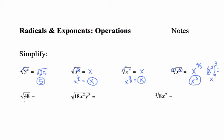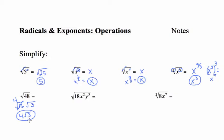Sometimes you can simplify square roots by splitting up what's under the radical sign. For example, I'm going to change root 48 into root 16 times root 3, since 16 times 3 is 48. The square root of 16 is 4, so the simplified version is 4 times the square root of 3, or 4 root 3. Notice the 4 is not a little 4 — it's not the 4th root of 3; it's 4 times the square root of 3.